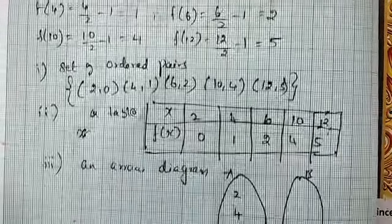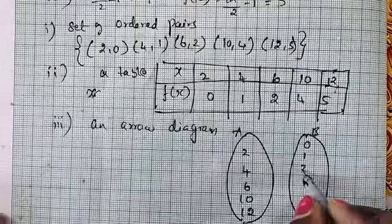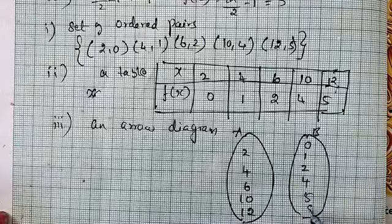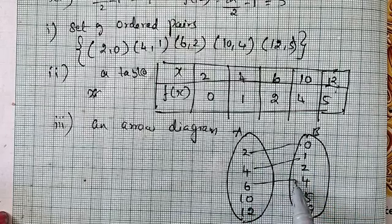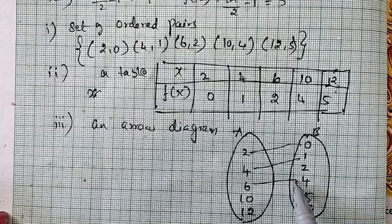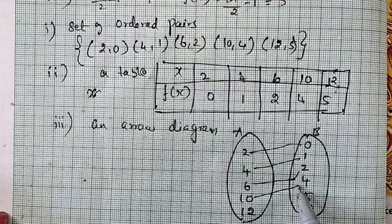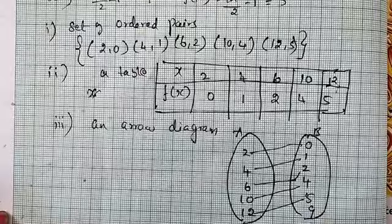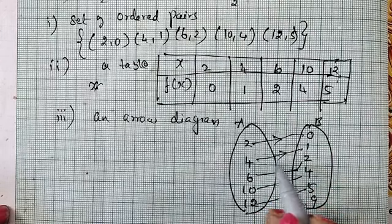The mappings: 2 to 0, 4 to 1, 6 to 2, and then 10 to 4, 12 to 5.